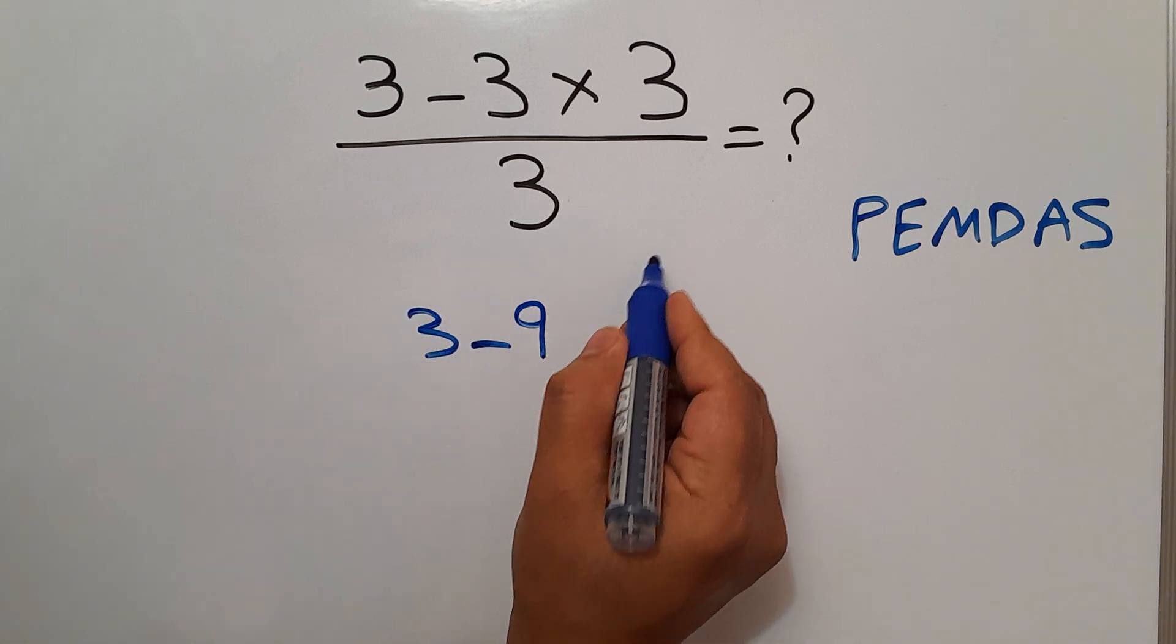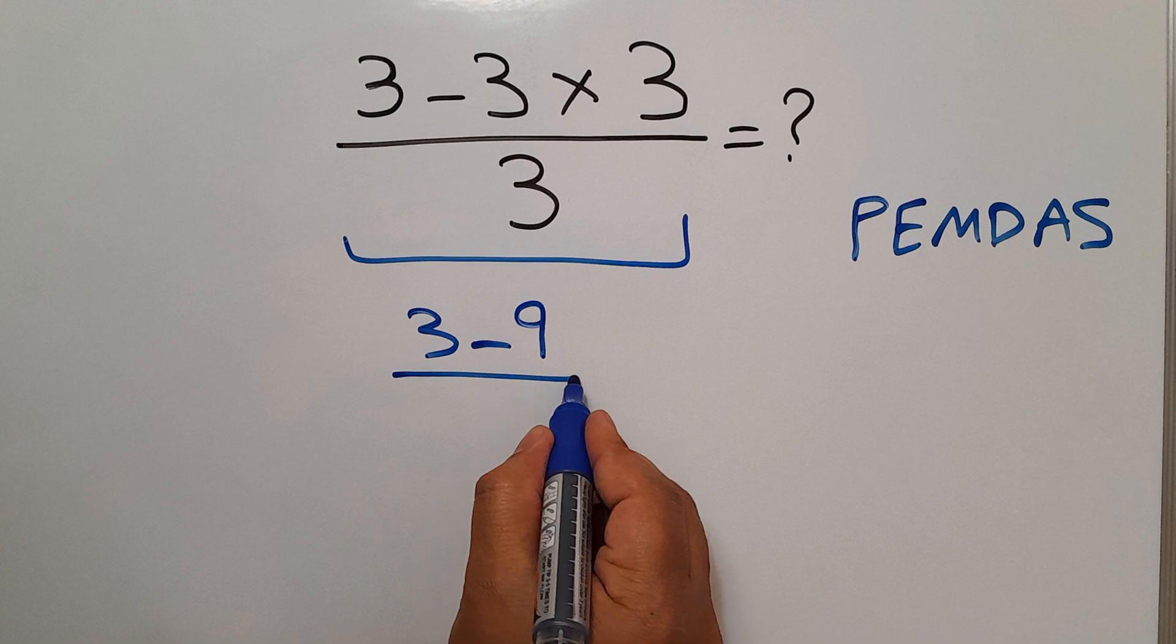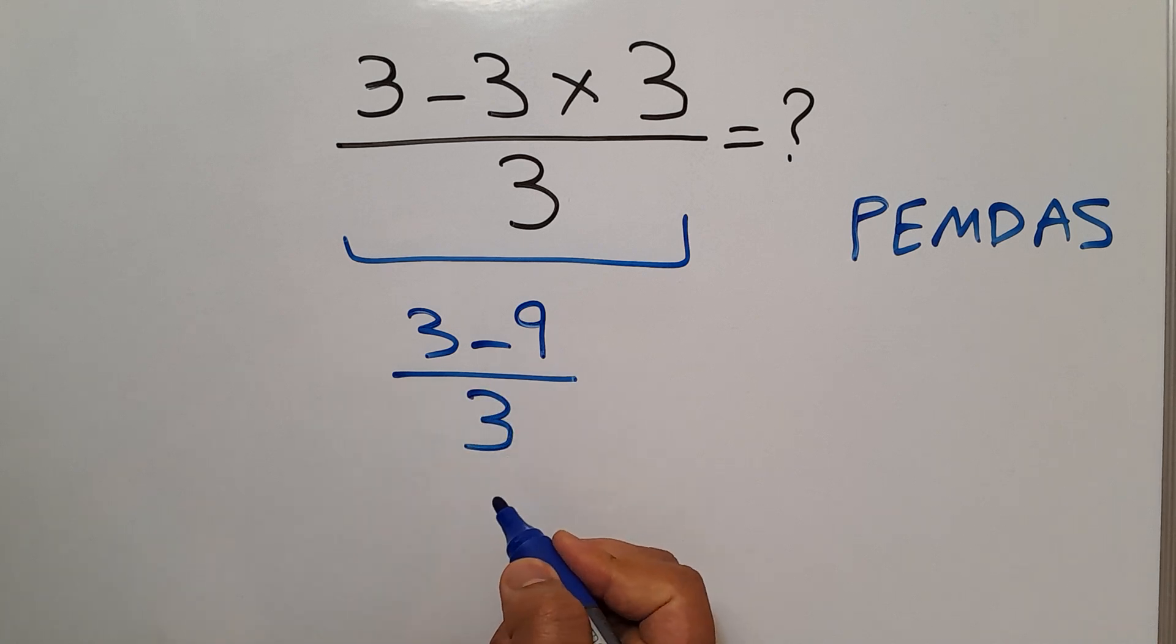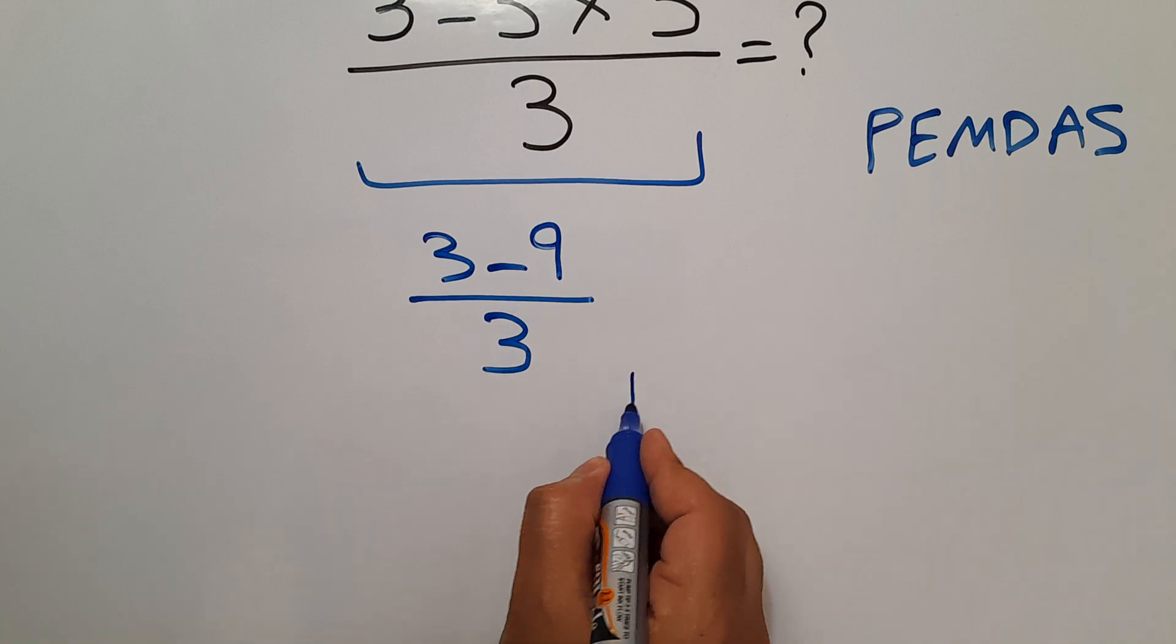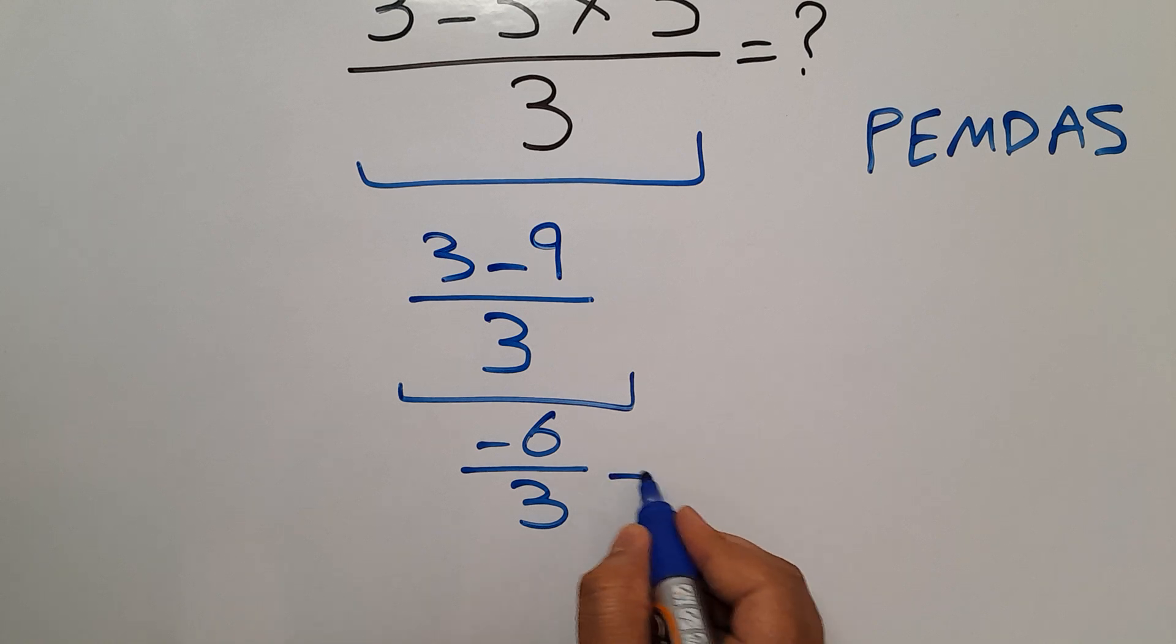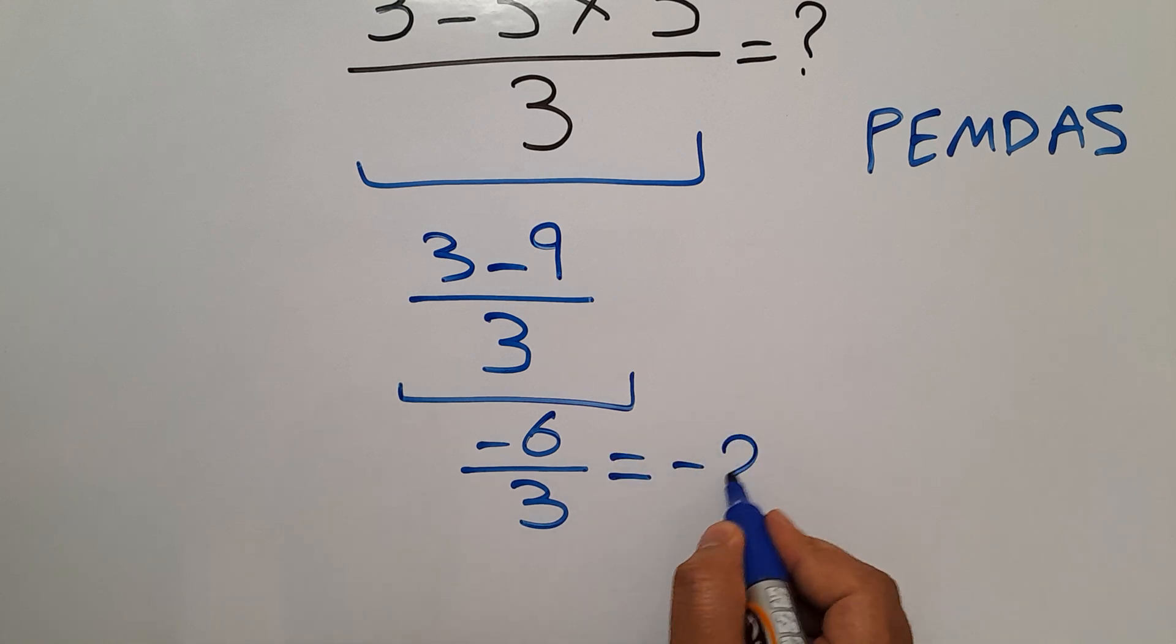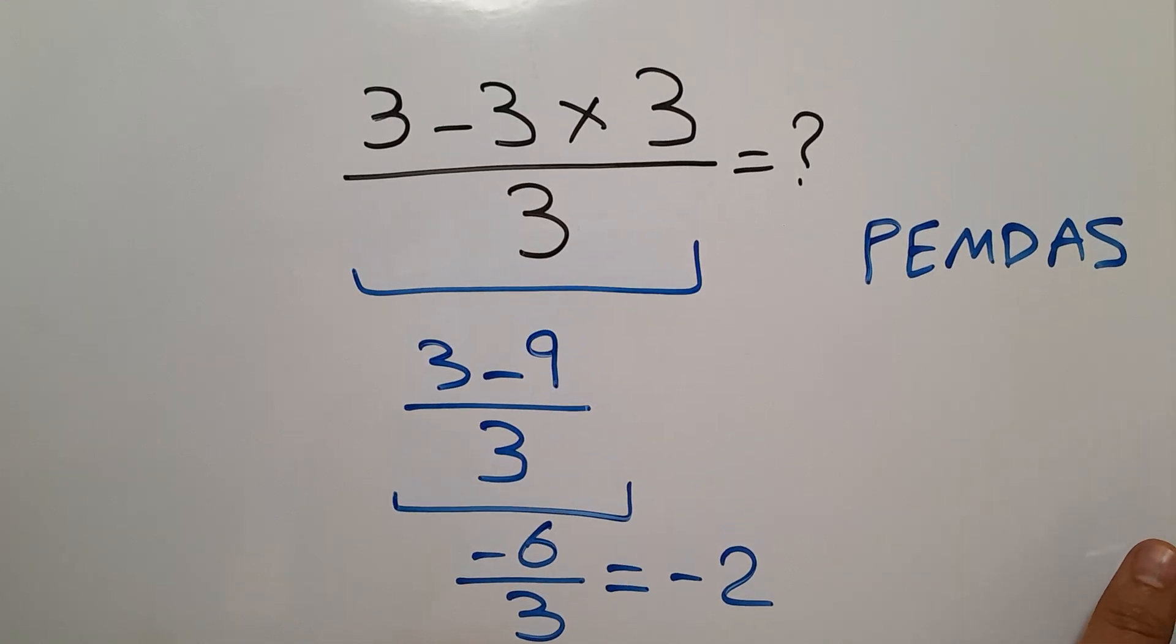So 3 minus 9, divided by 3. 3 minus 9 equals negative 6, so negative 6 divided by 3, and this is equal to negative 2. So our final answer to this problem is negative 2.